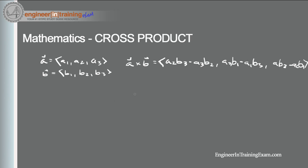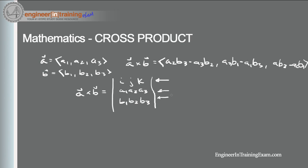So let me show you an easy way to remember the cross product of two vectors. The cross product can be written as a three by three matrix: I, J, K in the first row; A1, A2, A3 in the second row; and B1, B2, B3 in the third row. The first row is the standard basis vectors and must appear in the order given — I, J, and K. The second row is the components of vector A and the third row are the components of vector B.